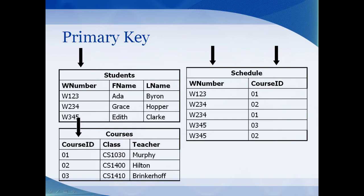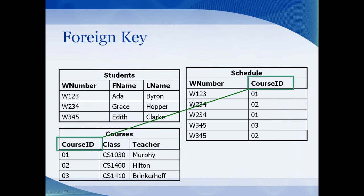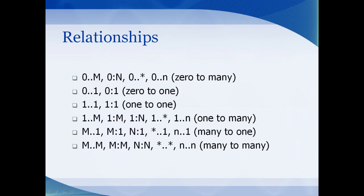Now each table has a primary key. The schedule table has a composite key — a key made up of more than one field. A foreign key exists when a field references another field that exists as a primary key in another table. For example, the course ID is referenced in both the courses and the schedule table: it's a primary key in the courses table and a foreign key in the schedule table. As you create tables, it's important to notice the relationships — one-to-one, one-to-many, or many-to-many.